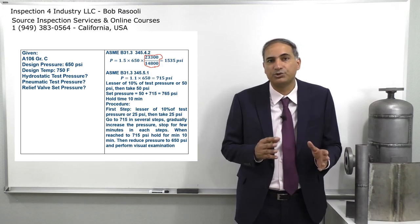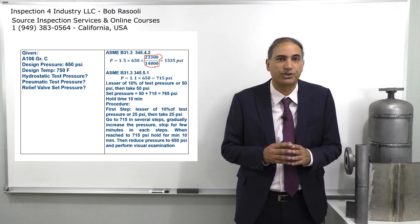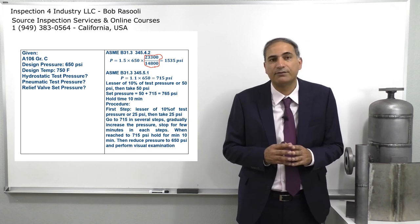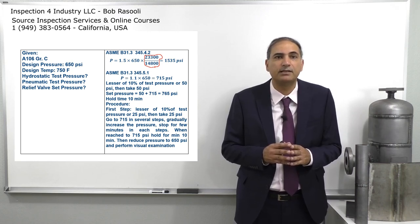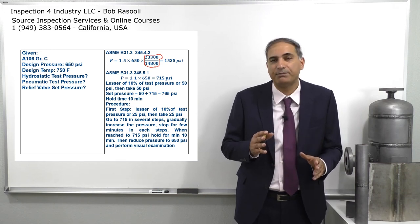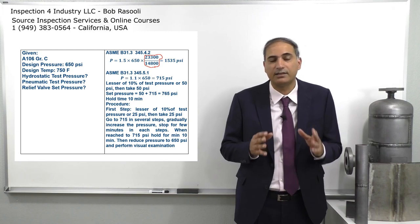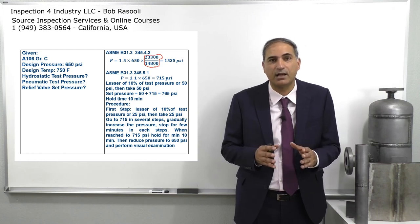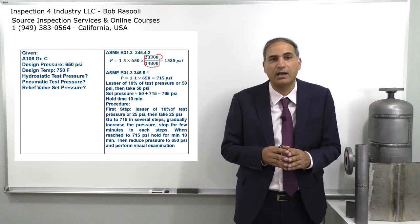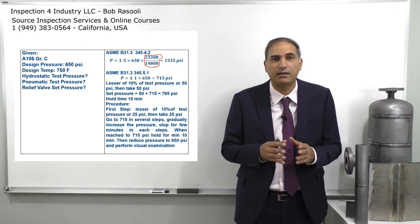Next, we check the relief valve set pressure. The code says take the lesser of 10% of the test pressure or 50 psi. Ten percent of 715 is 65 psi, and 50 psi is less than 65 psi, so we take 50 psi. Adding 50 psi to the test pressure of 715 gives us 765 psi as our relief valve set pressure.